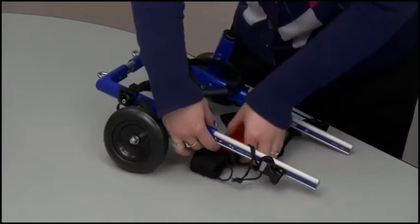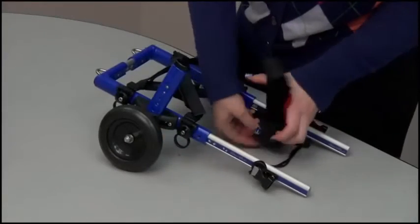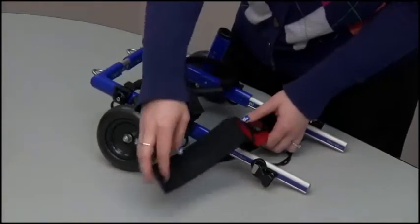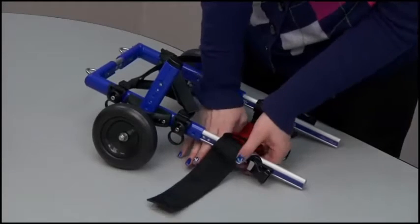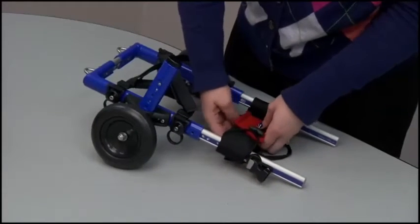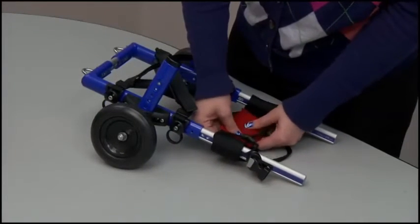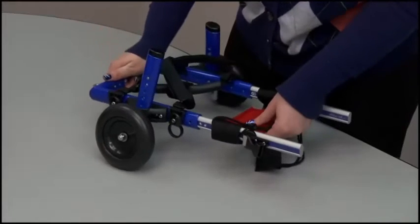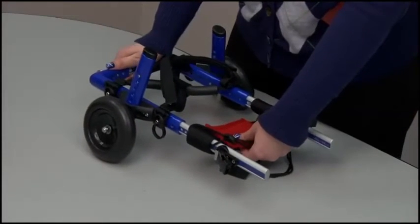For the other side, undo the velcro, put the velcro side over the extender, and reattach the velcro. Make sure that this red part is underneath your dog.